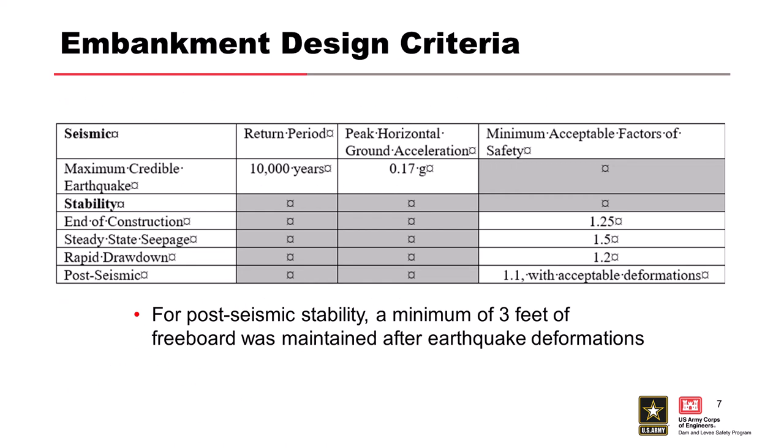The embankment design criteria were based on the maximum credible earthquake. Being in Colorado, the peak horizontal ground acceleration is not high. The design evaluated steady-state, rapid drawdown, and post-seismic cases. The minimum acceptable factors of safety were defined, and based on the post-seismic case it still had to maintain a minimum of three feet of freeboard — not difficult to achieve given the relatively low seismic loading.